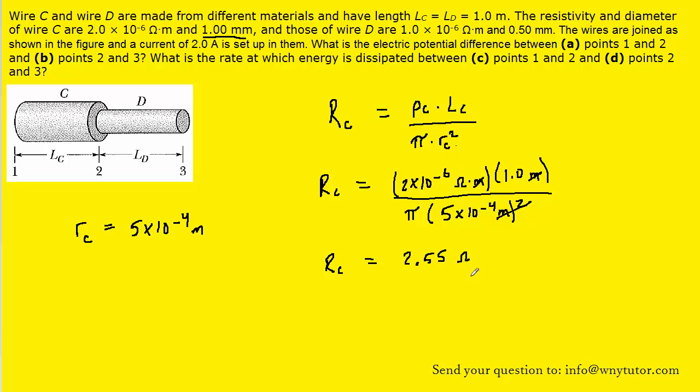Now, to find the electric potential difference between points 1 and 2, which again is in wire C, we just note that the potential difference across wire C will equal the current running through C multiplied by the resistance of wire C. Now, the current was given to us as being 2 amps.